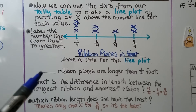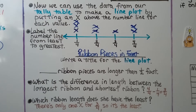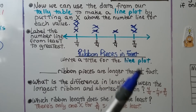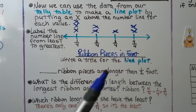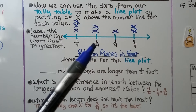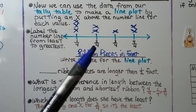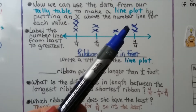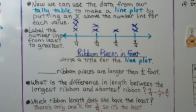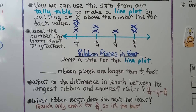So how many ribbon pieces are longer than half of a foot? In order to be longer than a half of a foot, it can't be half of a foot — it needs to be longer. We know two-fourths is equal to one-half, and one-fourth is less. So to be longer than a half foot, we have three ribbon pieces that are longer than a half foot.